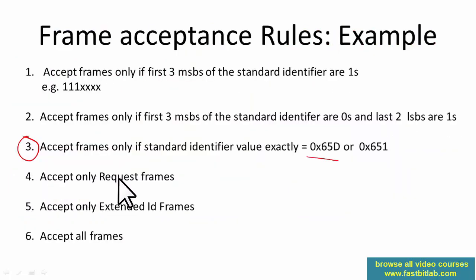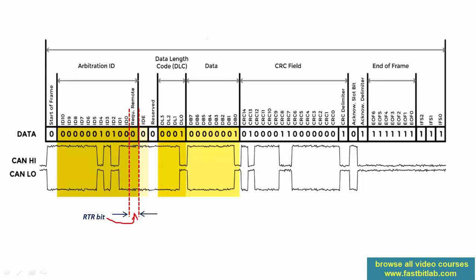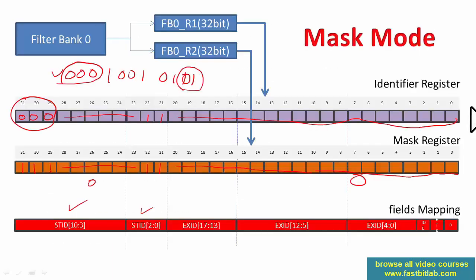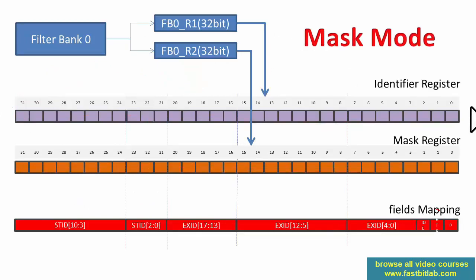Now let's see how to accept only remote request frames. In CAN protocol, RTR = 0 (dominant) means a data frame, and RTR = 1 (recessive) means a remote frame. Using mask mode, configure the RTR field: set the RTR bit in the mask register to one, and set the corresponding bit in the identifier register to one (recessive). When a frame is received, its RTR bit is checked — only recessive (remote) frames pass. All data frames have RTR dominant (zero), so they are discarded.